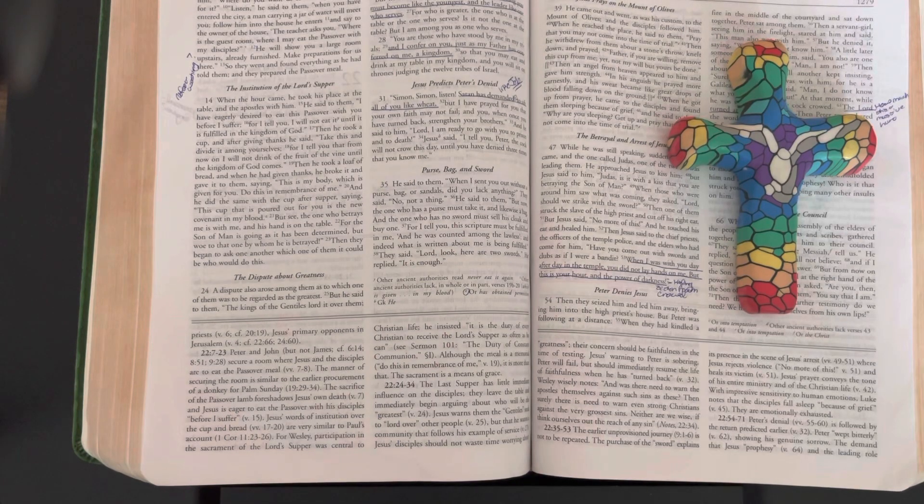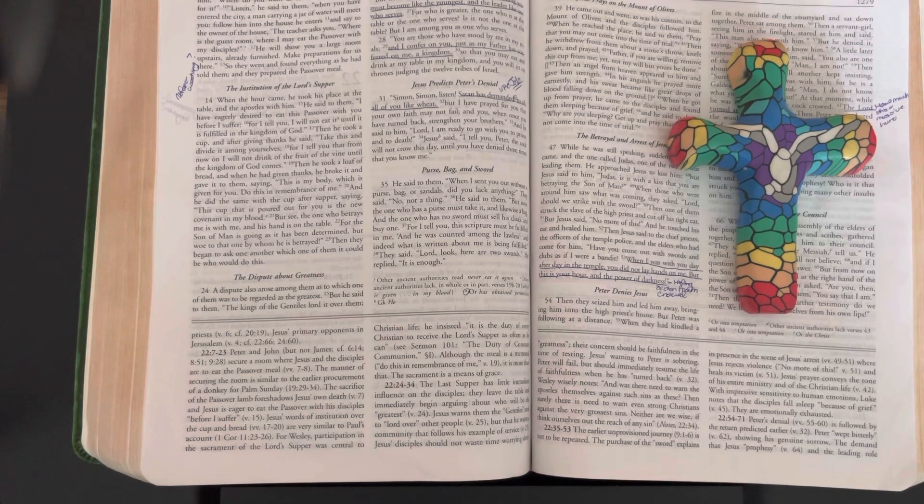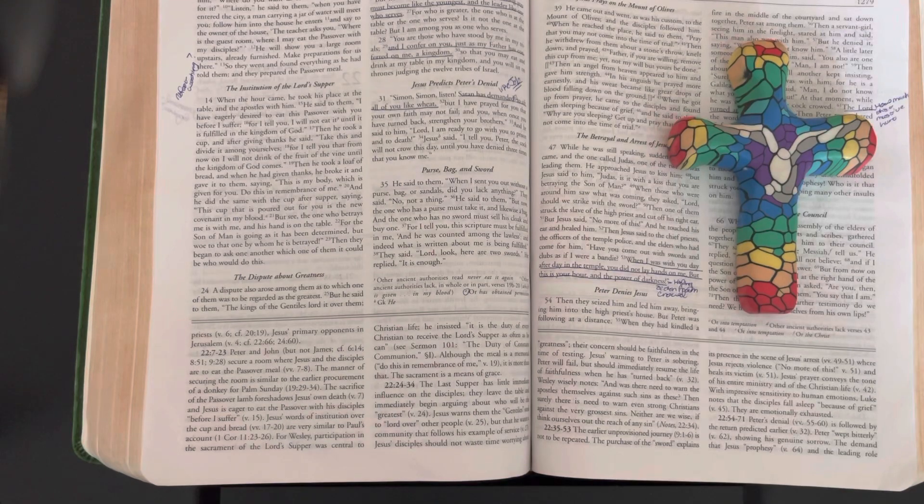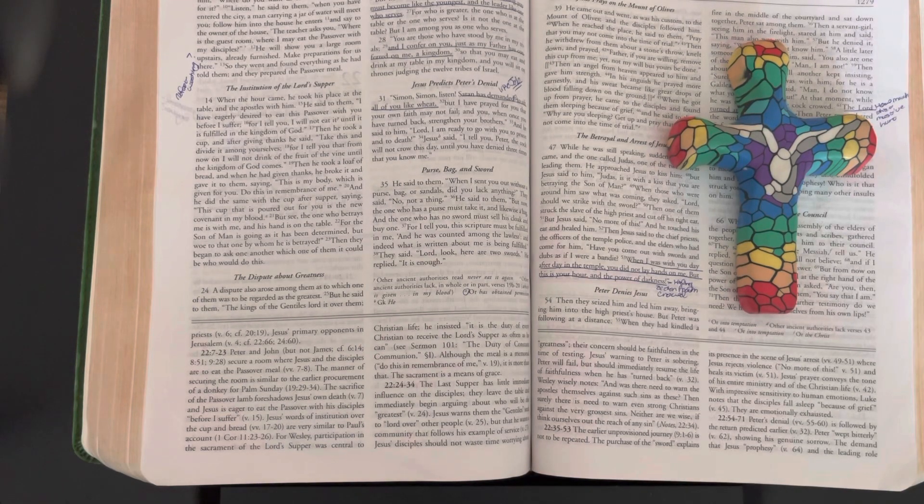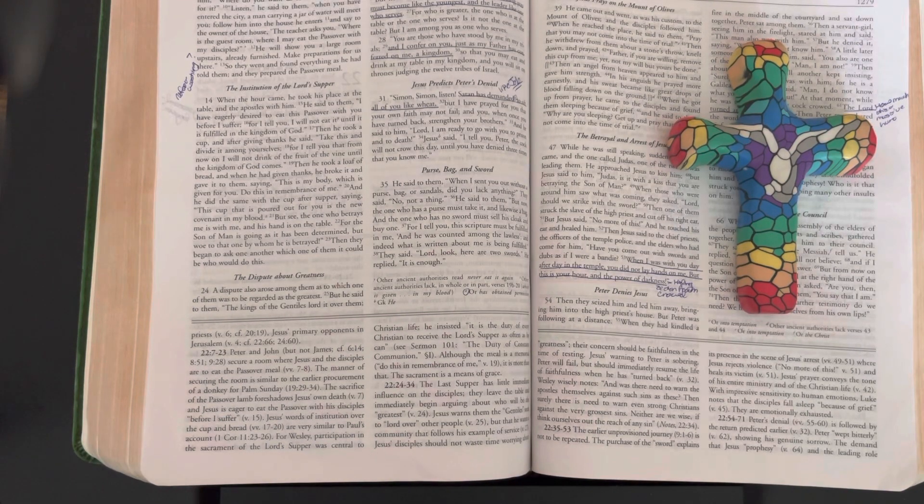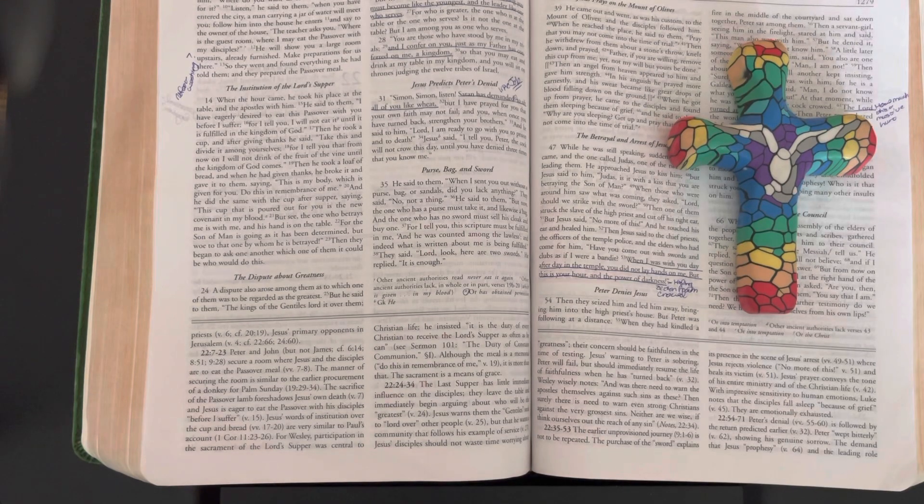"Say to the owner of the house, 'The teacher asks you, where's the guest room where I may eat the Passover with my disciples?' He will show you a large room upstairs already furnished. Make preparations for us there." So they went and found everything as he had told them, and they prepared the Passover meal.